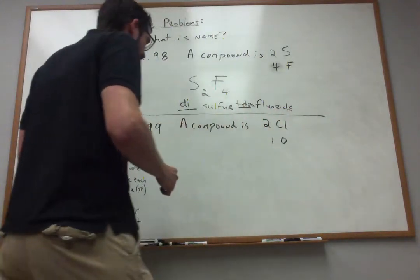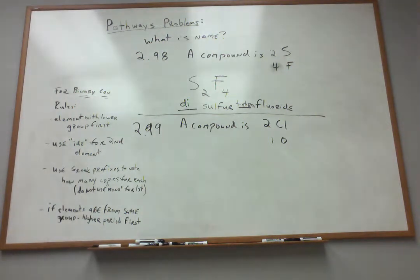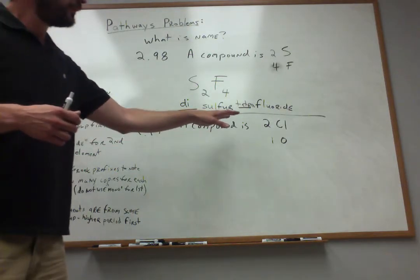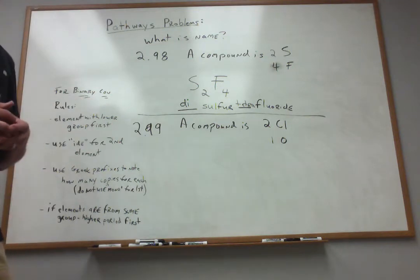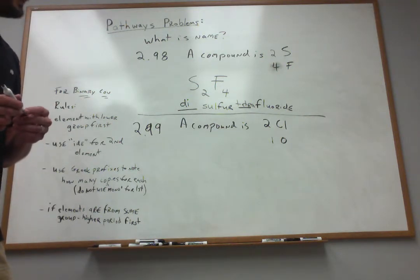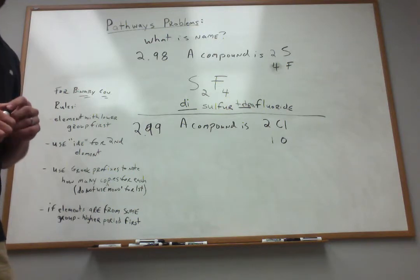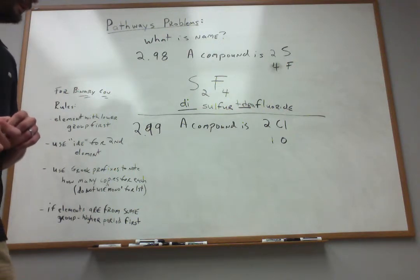What about 2.99? Here we're told that there's a compound between chlorine and oxygen. Two chlorine atoms, one oxygen atom. So what do we do? Well, we simply follow the rules. I say chlorine and oxygen, where are these located on the periodic table? Turns out they're in the same columns as the previous example. Chlorine is right below fluorine and oxygen is to the left of fluorine.